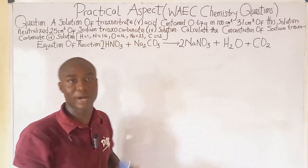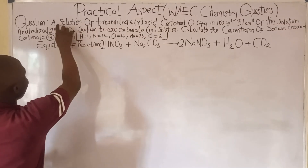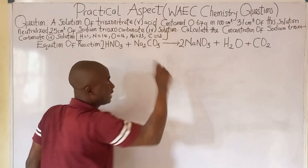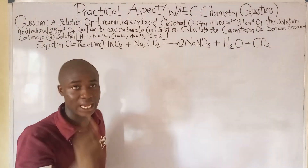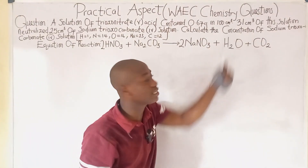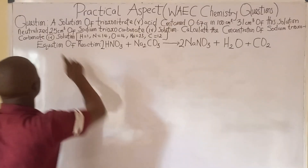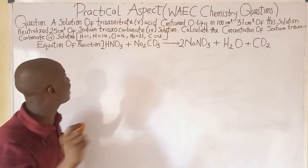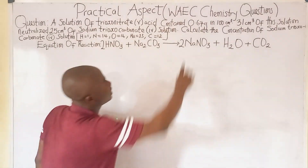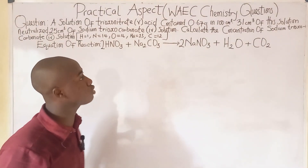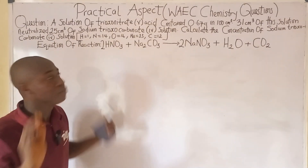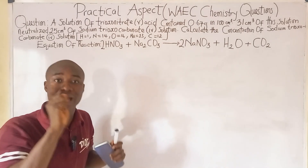Let's get into the first practice question. It says: a solution of trioxonitrate(V) acid contained 0.67 grams in 100 cm³. 31 cm³ of this solution neutralized 25 cm³ of sodium trioxocarbonate(IV) solution. The question says: calculate the concentration of sodium trioxocarbonate(IV).